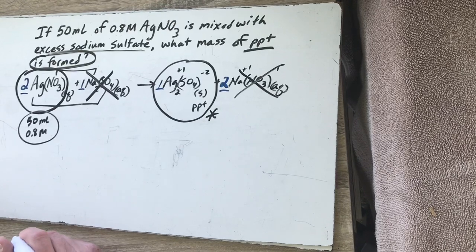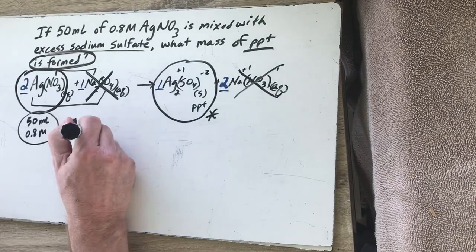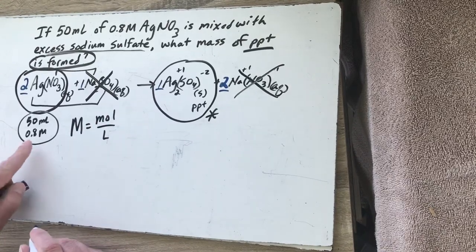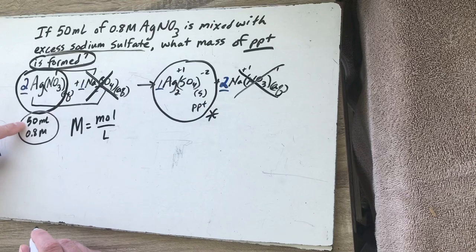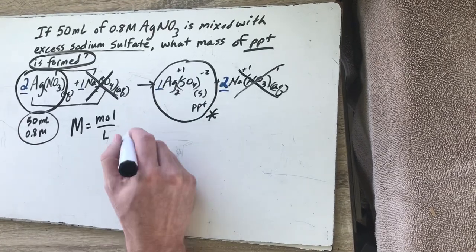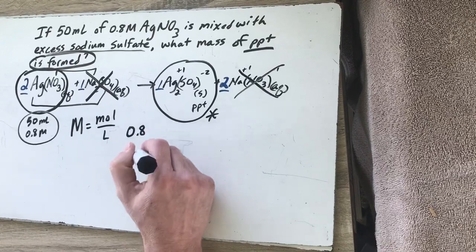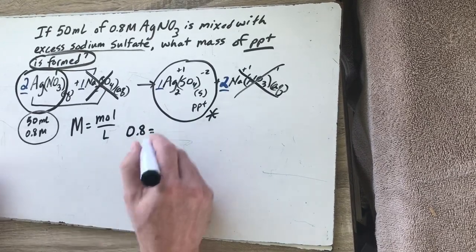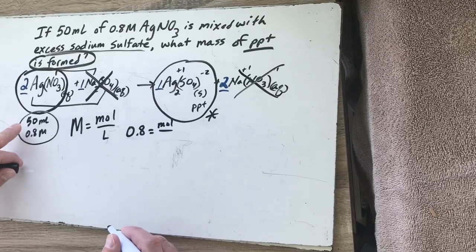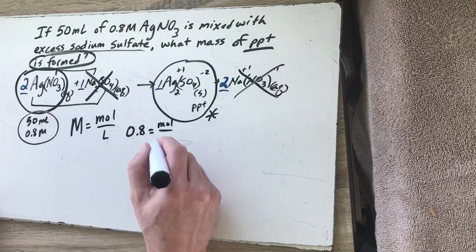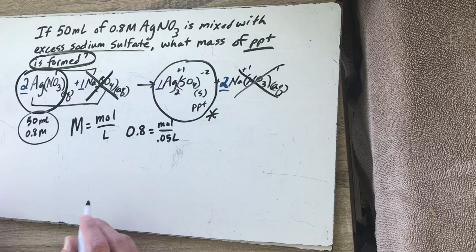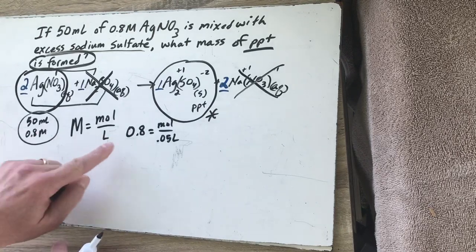We're going to remember that molarity equals moles divided by liters. Right here I've got a molarity, and right here I've got something that could be turned into liters. So I'm going to solve this for moles. I'm going to say molarity, which is 0.8, equals moles, which is my x I don't know, divided by 50 milliliters. Well that needs to be in liters on the bottom, so I'm going to put 0.05 liters. Remember to move your decimal three spots.